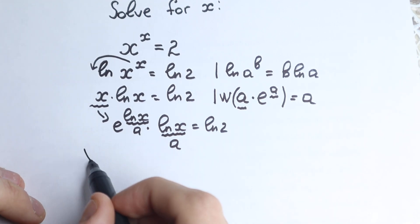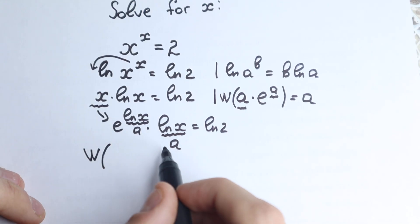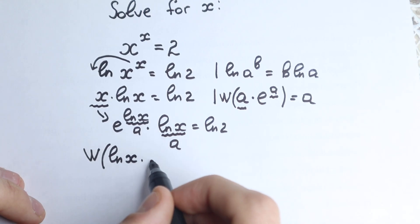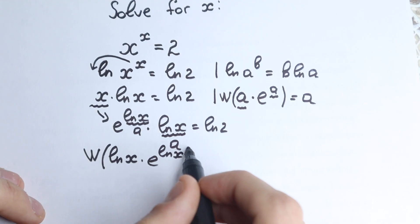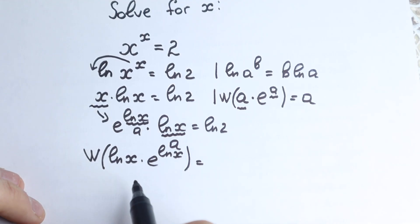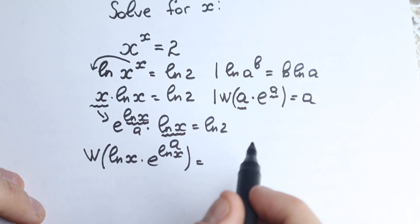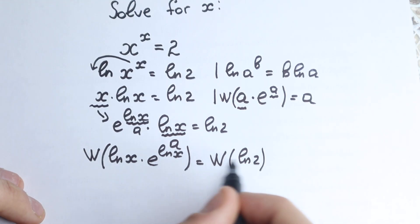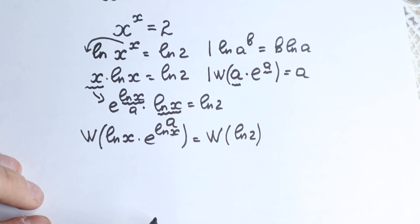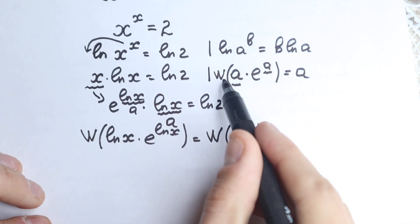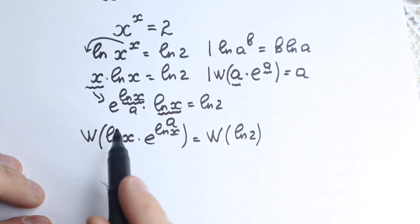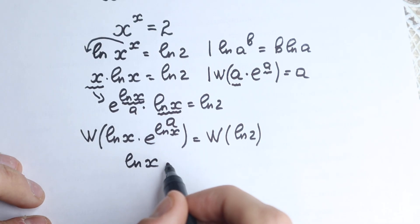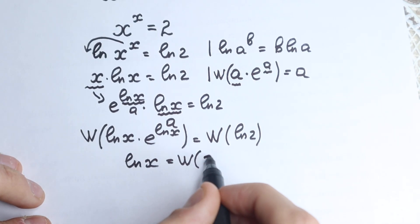We apply the Lambert W function to the left hand side — and we must also apply it to the right hand side. The left side gives us our 'a', which is ln(x). So we have ln(x) = W(ln 2). As you can see, we've simplified this a lot — there's no more Lambert W on the left and no e, just ln(x) equal to W(ln 2).